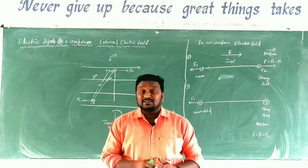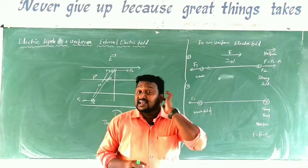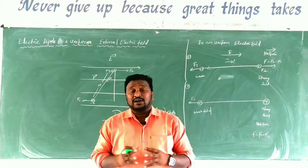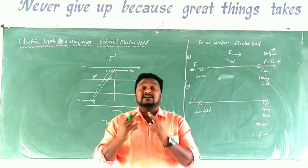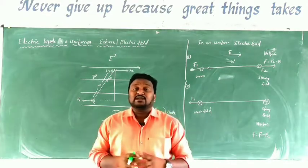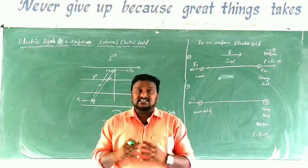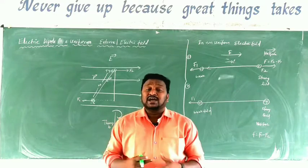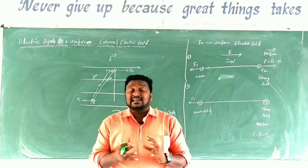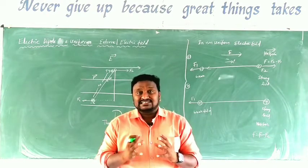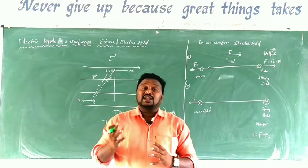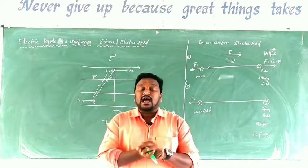In the previous video I explained the properties of electric field lines, the definition of electric flux, and when electric flux is maximum and minimum. Today's topic is: when an electric dipole is placed in a uniform electric field and a non-uniform electric field, what happens in those two situations.